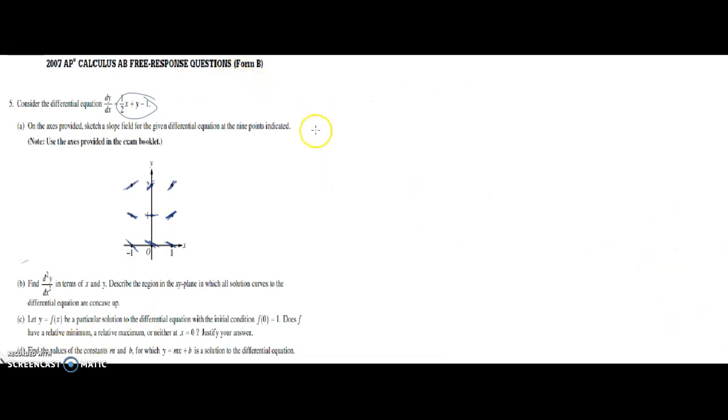For part c, it says let y equal f of x be a particular solution to the differential equation with the condition zero comma one. Does f have a relative min or max, or neither, at x equals zero? Justify your answer.